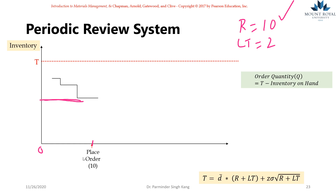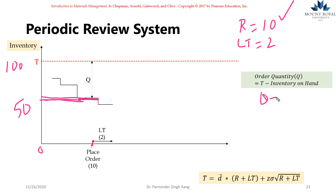After placing the order, we still have usage happening for the next two days. The quantity ordered on day 10 is determined by the physical inventory on hand. In simple terms, if our target is 100 units and on day 10 we have 50 units on hand, then Q = 100 − 50 = 50. So we order 50 units from our supplier on that day.